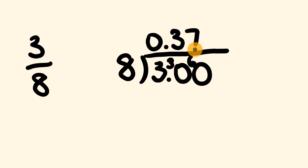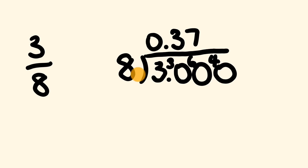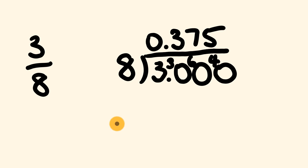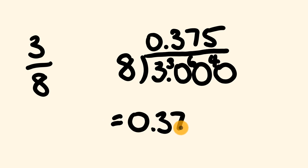That's 60 take away 56, we have 4 left over. I'm going to put a 0 down here because we can continue this on, and this 4 will continue. How many times does 8 go into 40? 8 goes into 40 five times and there is no remainder. So there you have it — we've converted 3 eighths into its decimal: 3 eighths is equal to 0.375.